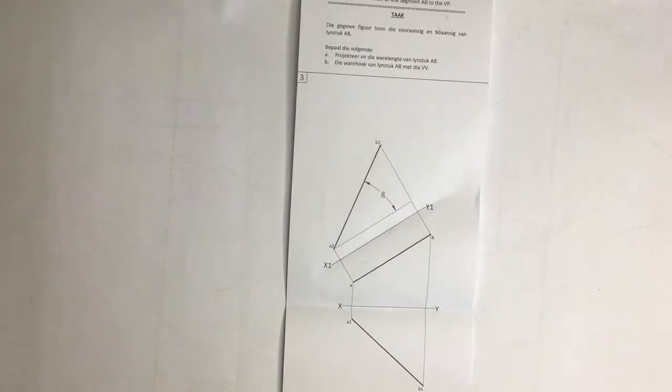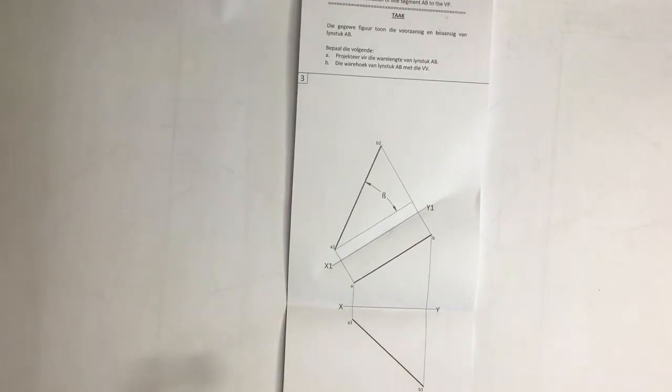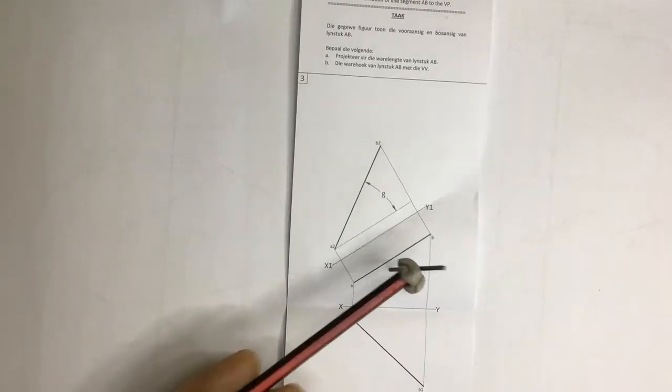Alright, we're going to have a look at this lines and points in space question. It's a question coming out of the grade 10 HSE workbook. You can see that it's done in first angle orthographic projection, which means that I've got a front view over there...